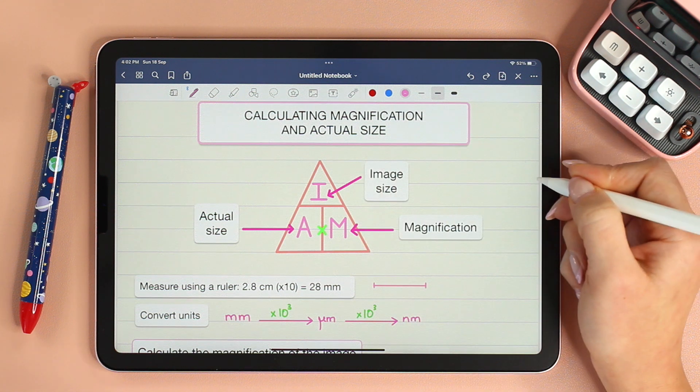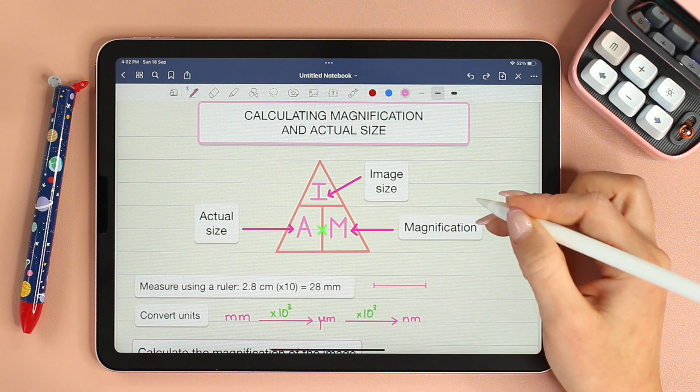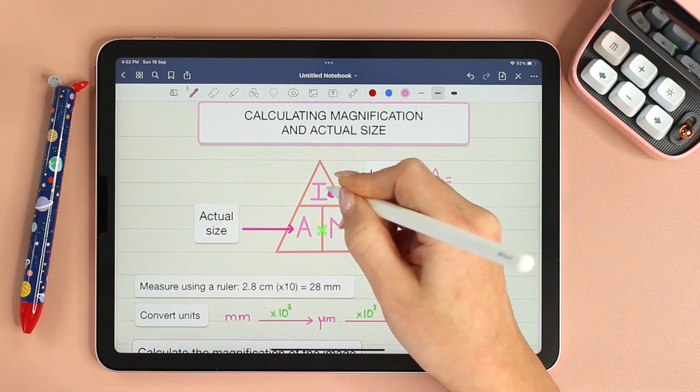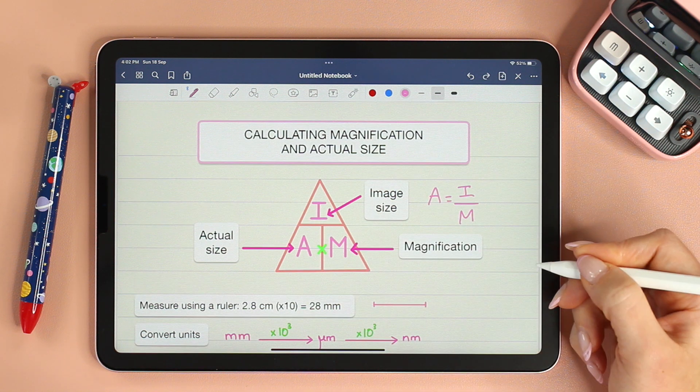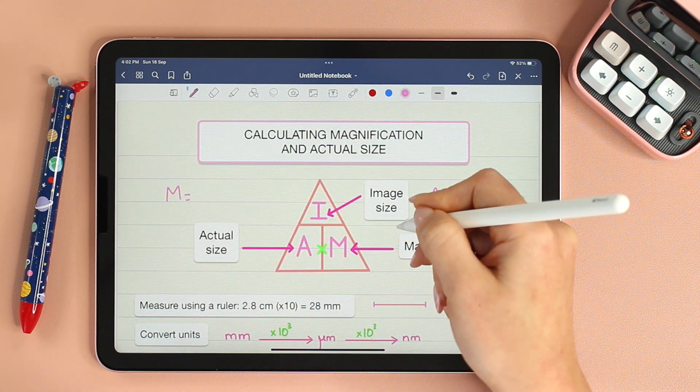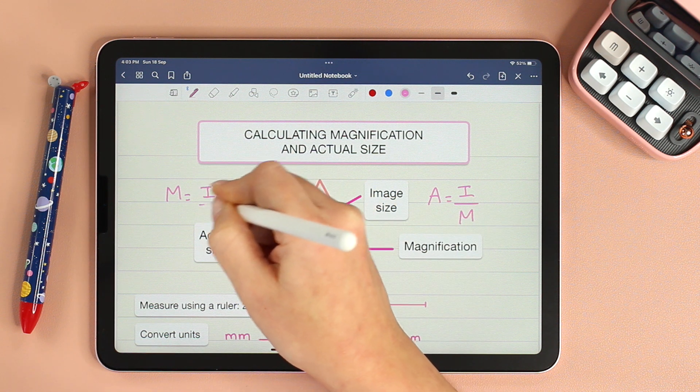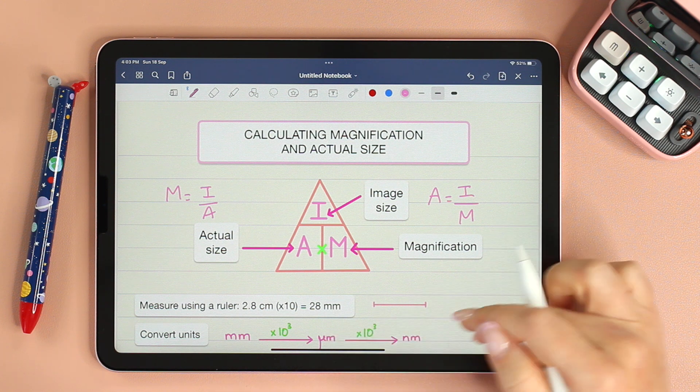Hence the equation: actual size times magnification gives you the size of the image. But we will be asked to find A or M. Therefore, keep in mind the triangle so that if we are asked to find A, then A equals I divided by M. And if we're asked to calculate the magnification M, then M equals I divided by A. Before we solve both scenarios, let's look at units and unit conversions.